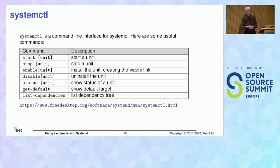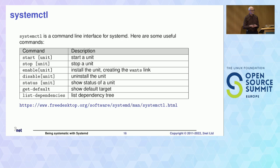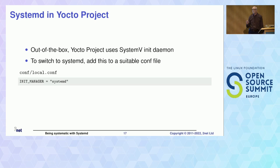In a moment I'm going to do a demo. To interact with systemd I use systemctl, the command line interface to systemd. For the demo I'm going to be using Yocto project. By default, for whatever reason, Yocto is going to use SysVinit, not systemd. You'll have to make a tweak and add 'INIT_MANAGER = "systemd"' to your local.conf or any other conf file.